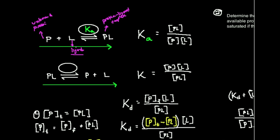But think about it. PL is dissociating. So this equilibrium constant, which is given by P times L divided by PL, that's the dissociation constant. So this is K_D, and the D here stands for dissociation, K_D.